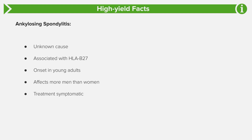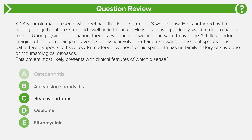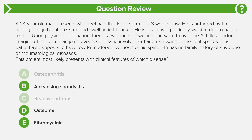Once you understand the pathophysiology, you can identify it in the question stem and go straight to the answer. But let's go through other answer choices to help eliminate them. Answer choice A, osteoarthritis, is joint degeneration due to injury or malformation, typically seen in someone older with a chronic condition — not in a young guy. Answer choice C, reactive arthritis, can be seen a few weeks after a gastrointestinal or genitourinary infection, and can also present with urethritis or conjunctivitis. There's no preceding infection here, so we can eliminate reactive arthritis.